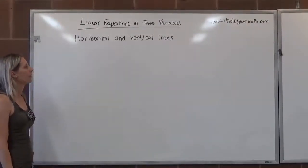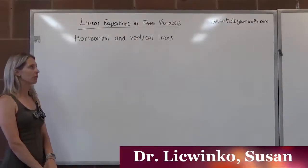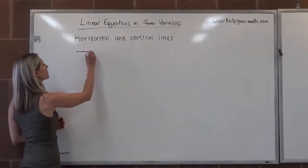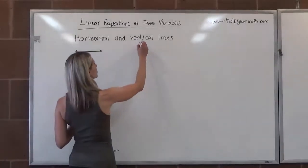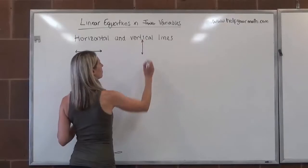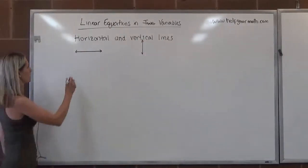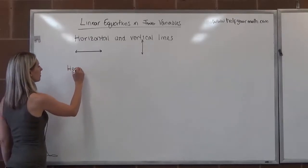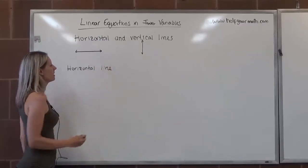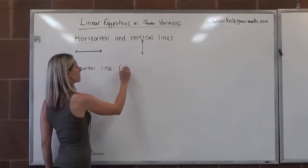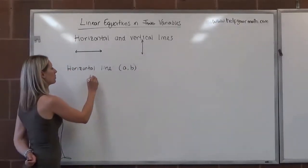We're going to talk about horizontal and vertical lines. A horizontal line is one that goes across from left to right with no steepness, and a vertical line is one that goes straight up and down with no slope. If we have a point on a horizontal line, let's say (a, b), it would be given by y equals b.